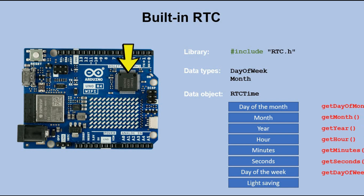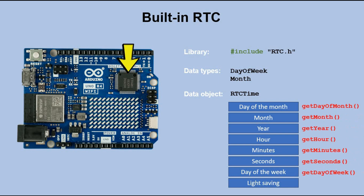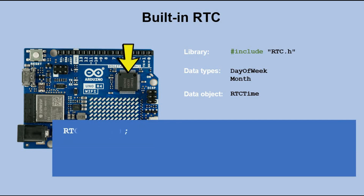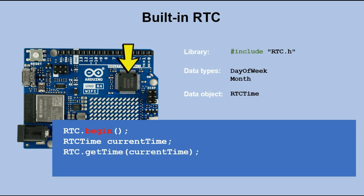The library provides a set of methods we can use to get any of this information from the RTC object. In the code, we have to initialize the RTC module. After that, we declare the RTC time object — at this point it doesn't have any important data in it. Then we use the getTime method to fill up this RTC time object with the current time from the RTC module. After that, you can use methods — for example, the getDayOfTheMonth method to show the day of the month.